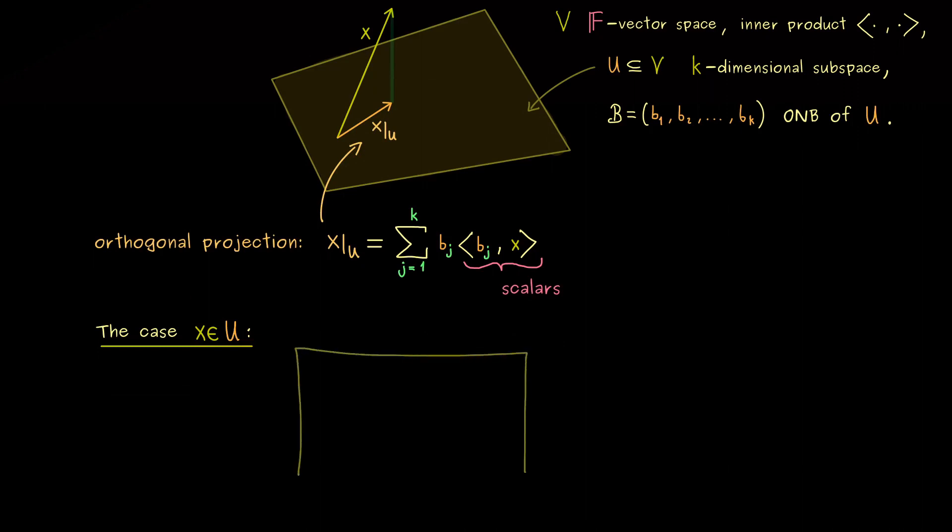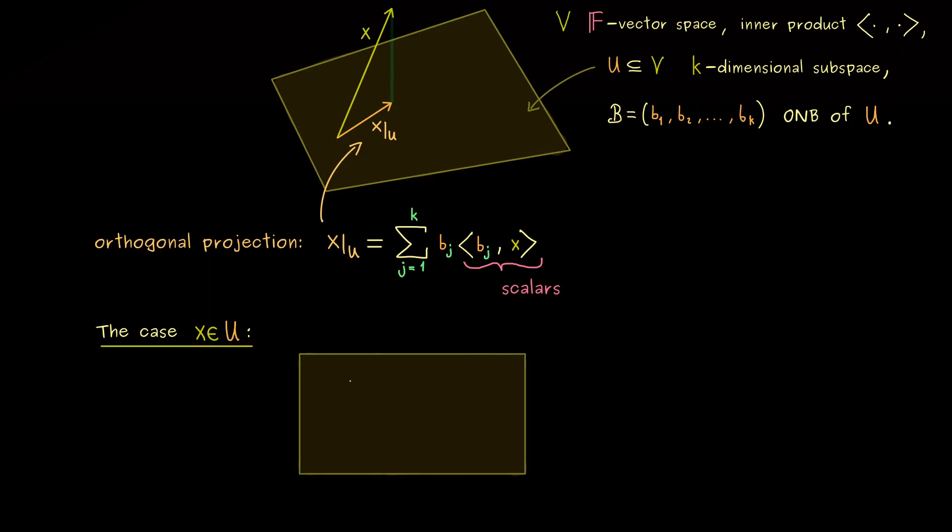Now we just have to consider the subspace U. And inside U we find our nice basis vectors from B which are mutually orthogonal and also normalized. So every vector has length 1. And now our vector x also lies in U, which means it can be represented by a linear combination with the vectors from B.